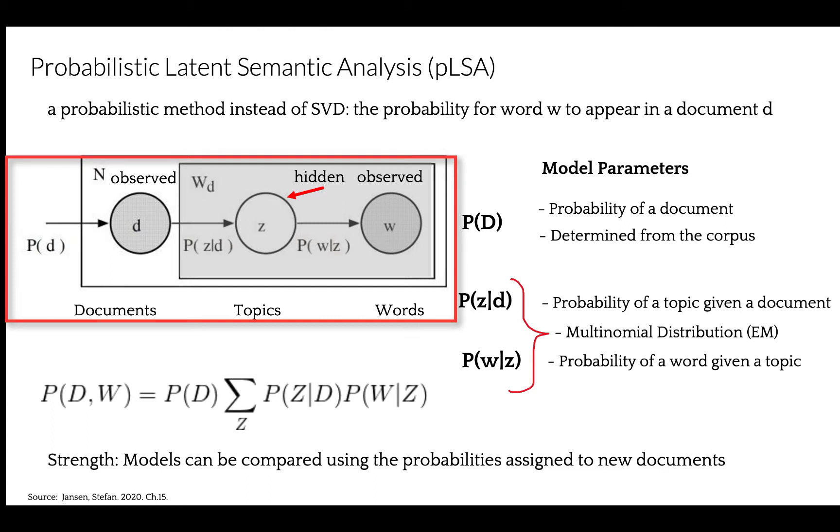Let's look at this plate notation here. It describes the statistical dependency in our probabilistic model. Probability of document is observed and determined from a corpus. Probability of a topic given a document and the probability of a word given a topic are not observed. So this shaded area represents a hidden topic distribution. Both conditional probabilities are modeled as multinomial distributions and can be trained via expectation maximization algorithm EM, which determines parameter estimates for a model that depends on those latent variables. The benefit of using this probabilistic model is that now we can compare models by evaluating the probability they assign to new documents.